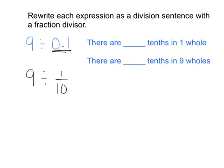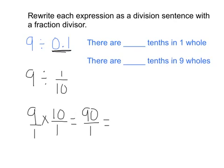Well, when I remember my rule of leave it, change it, flip it, this 9 is really a 9 over 1, and I can multiply across. 9 times 10 is 90, 1 times 1 is 1, and I have an answer of 90. And then I look at the questions that they ask me.